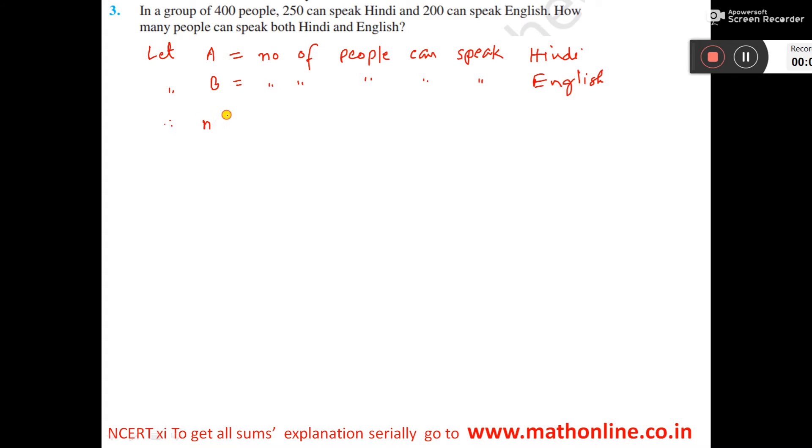So N(A∪B) is equal to 400. N(A), those who can speak Hindi, is 250.